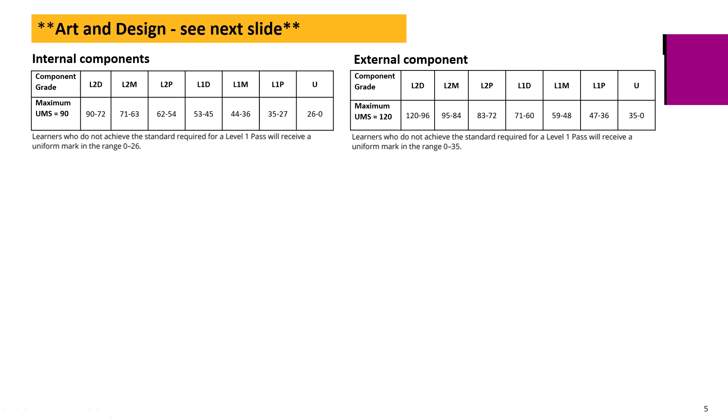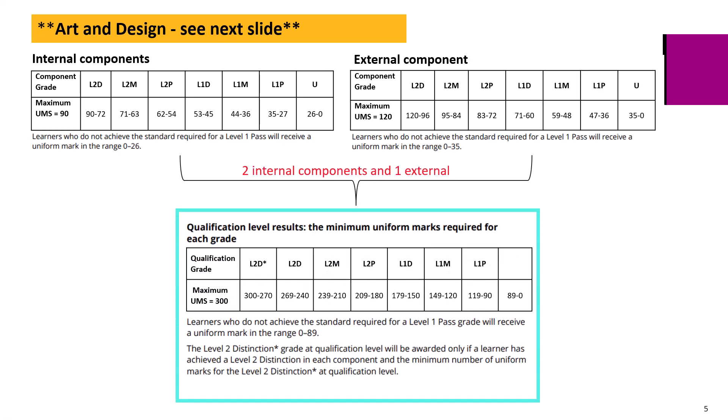Uniform marks from all components are added together to determine the overall qualification level uniform marks and the corresponding grade. Please also note that learners achieving a U grade will still receive uniform marks for that component, which is added to the overall qualification grade calculation. This is what is meant by the qualification being fully compensatory.